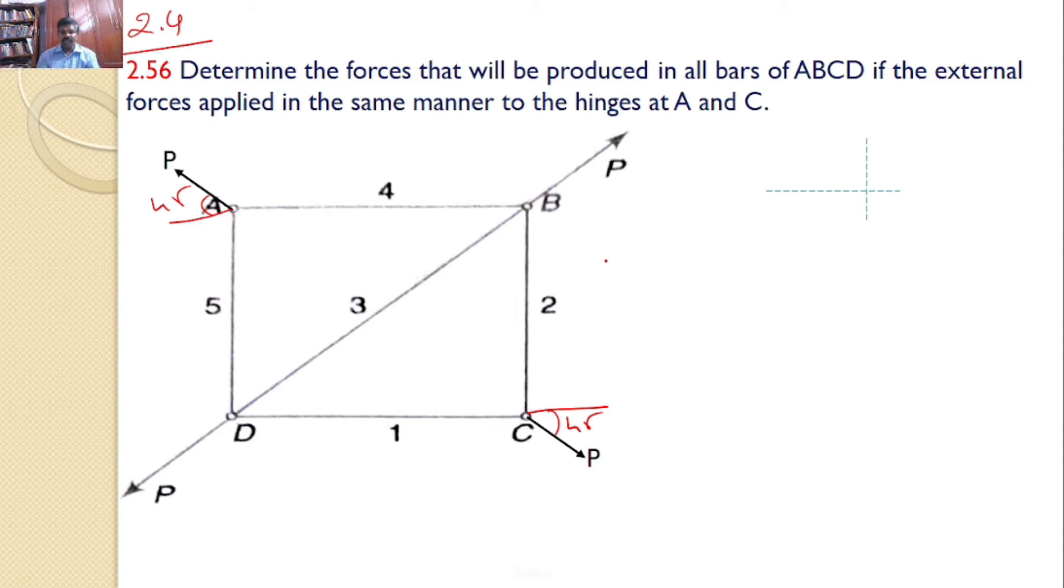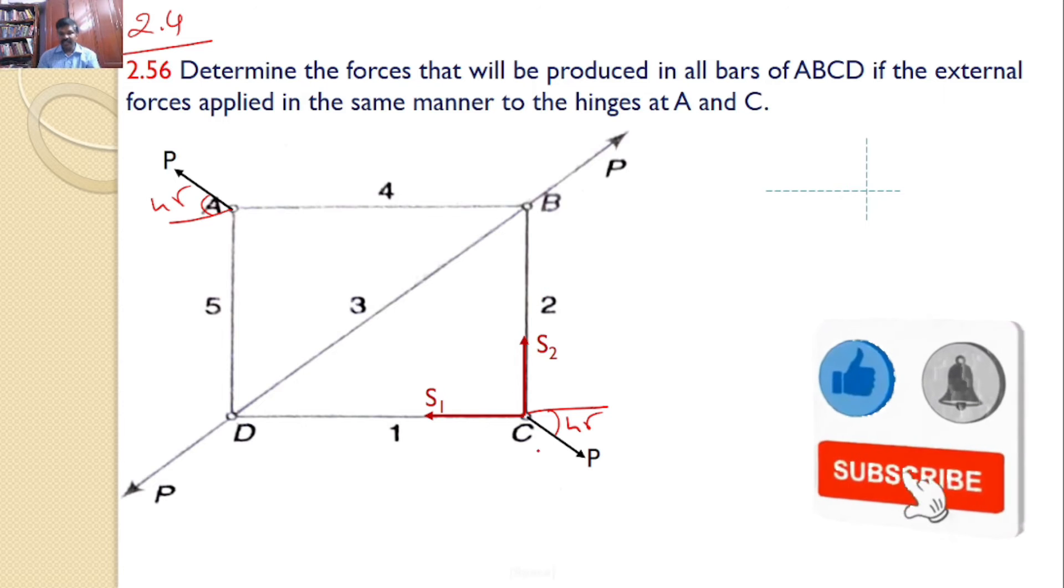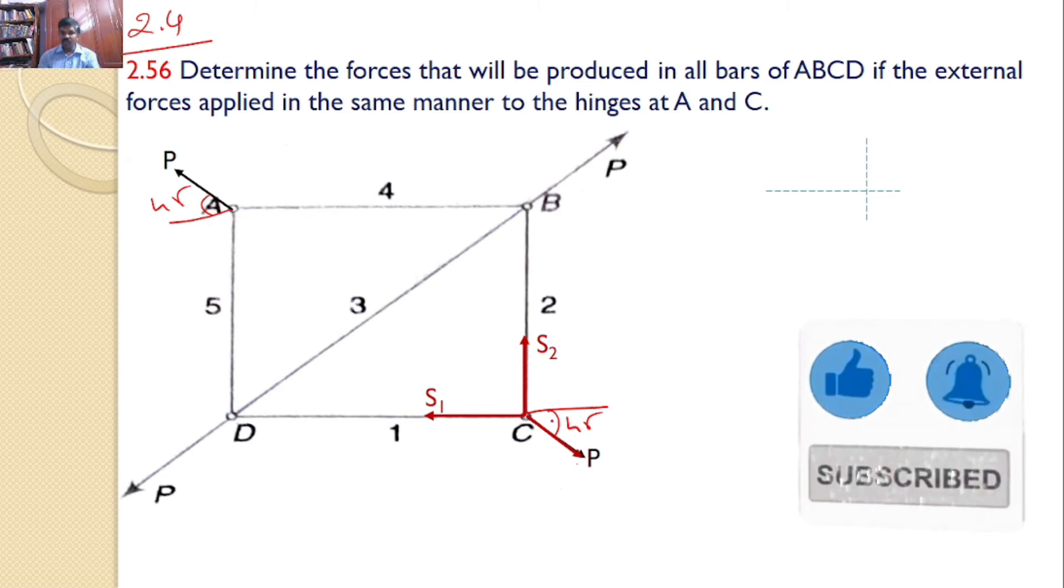Now, let us take hinge by hinge. First, let us consider hinge C. There are three forces. One force is S1. Another force is S2 acts along the bar S2. And there is an applied force P which makes an angle 45 with the horizontal. Let us transfer all these three forces onto separate x-y plane.